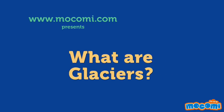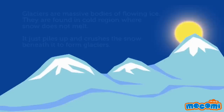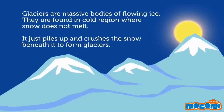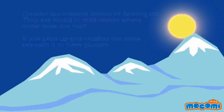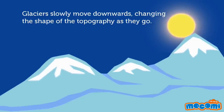What Are Glaciers? Glaciers are massive bodies of flowing ice. They are found in cold regions where snow does not melt. It just piles up and crushes the snow beneath it to form glaciers.